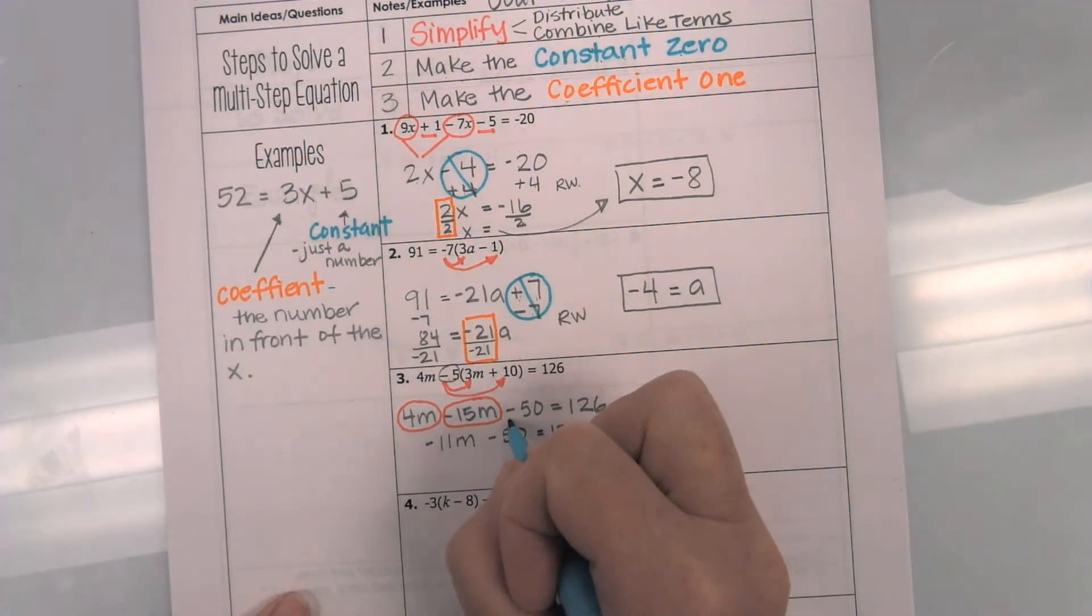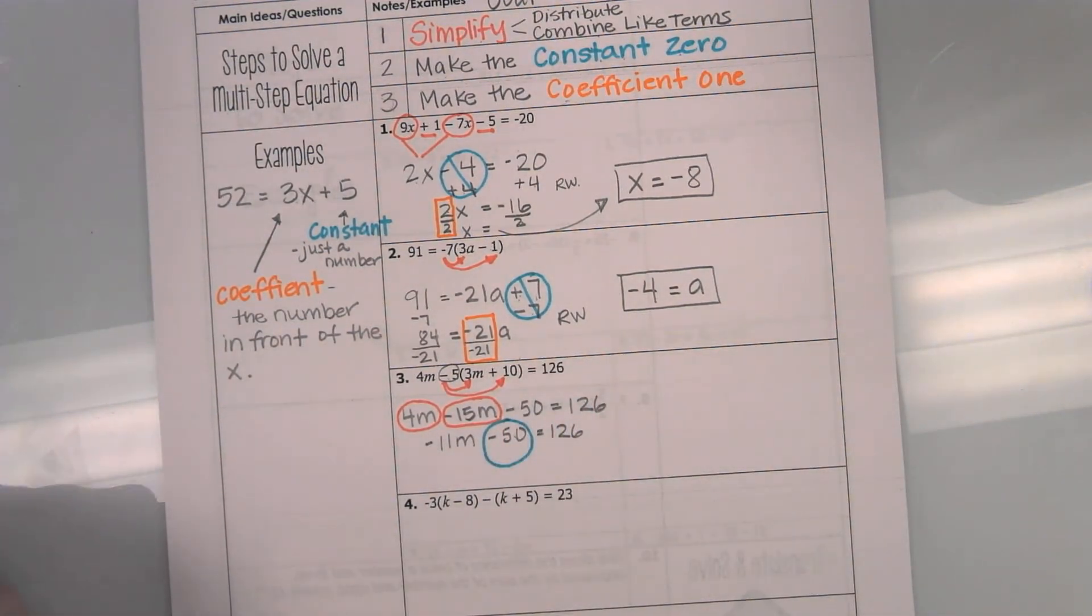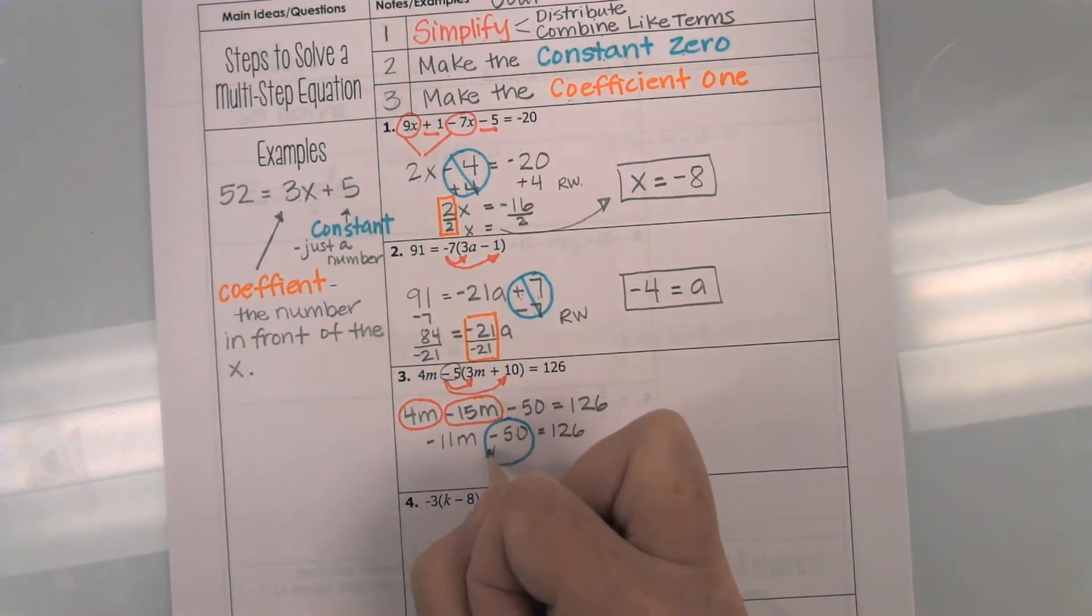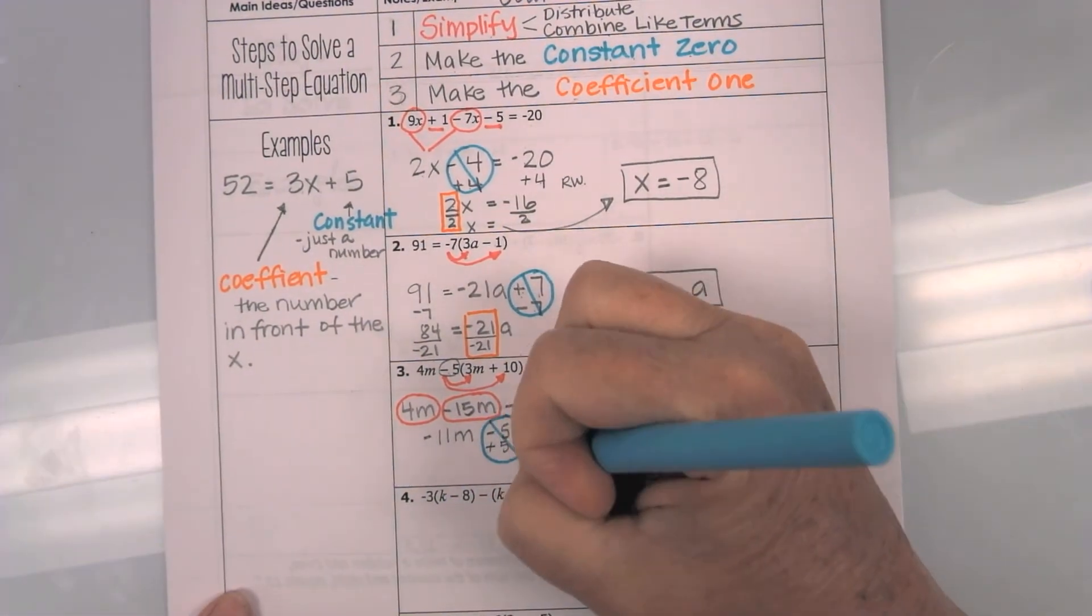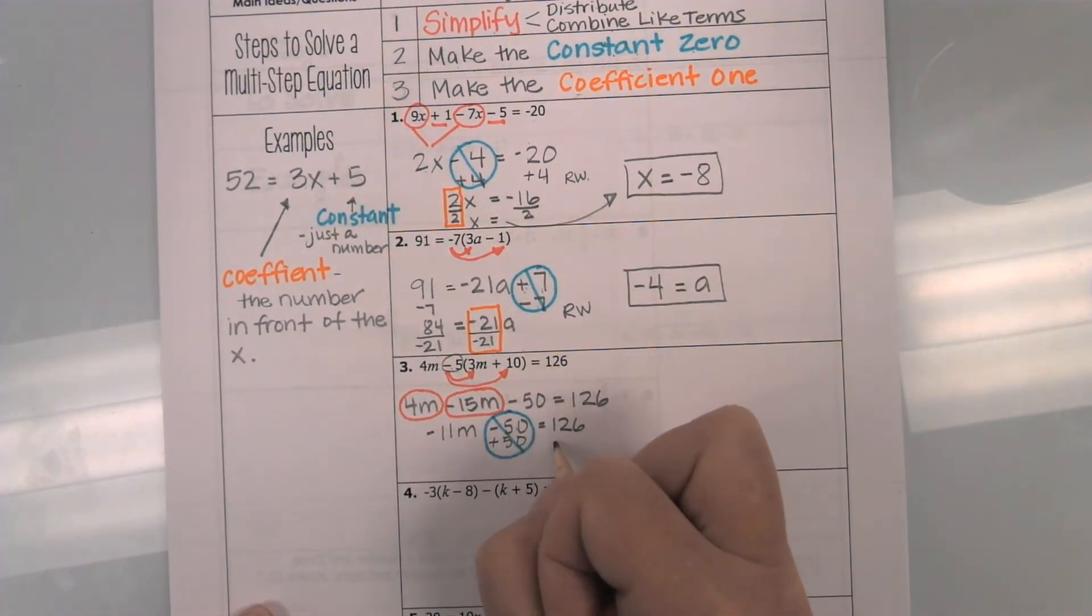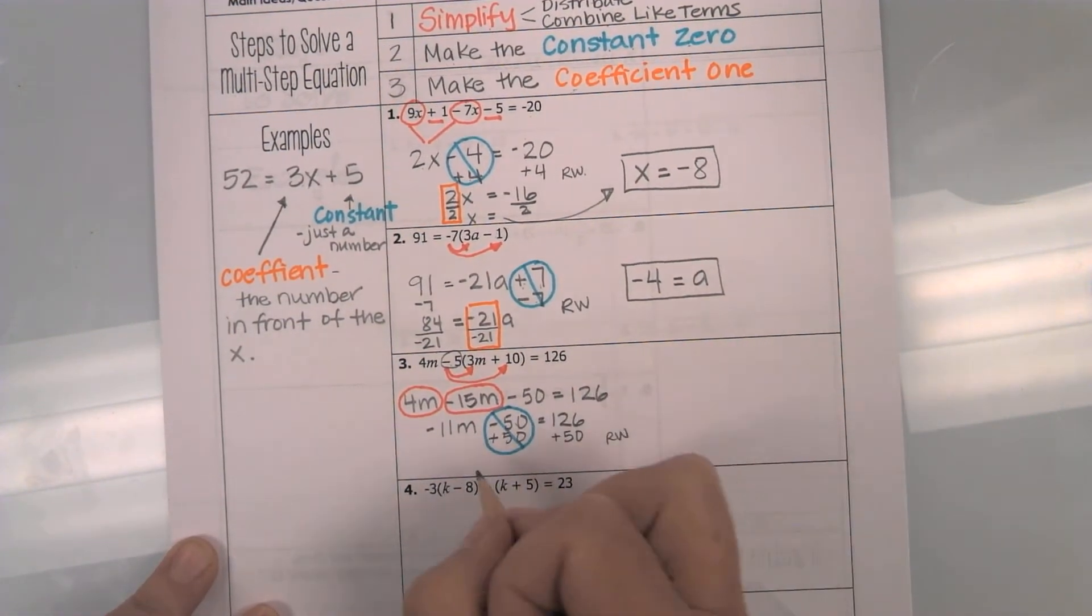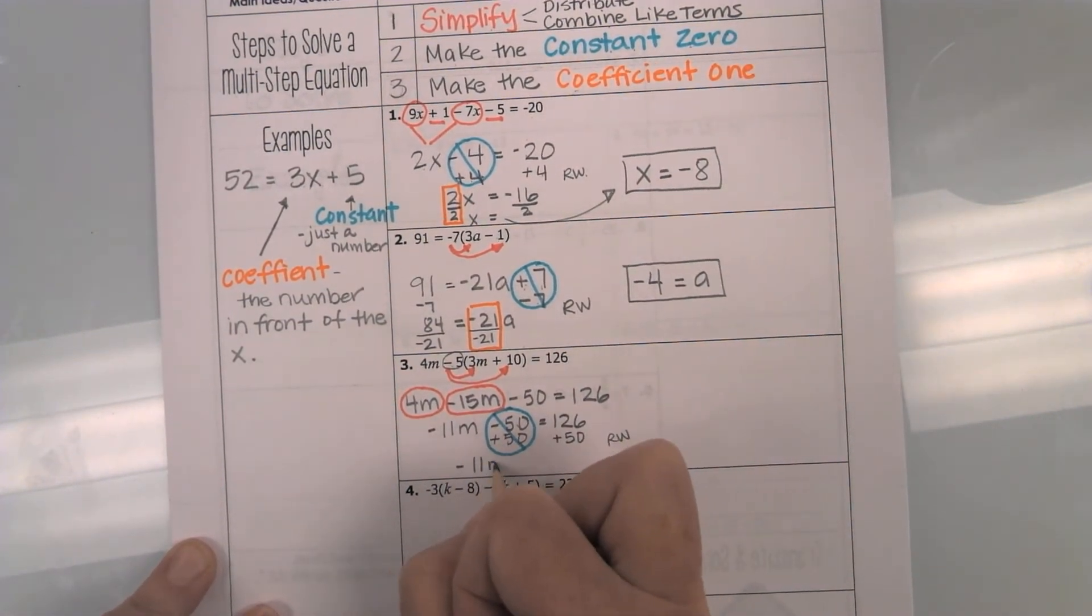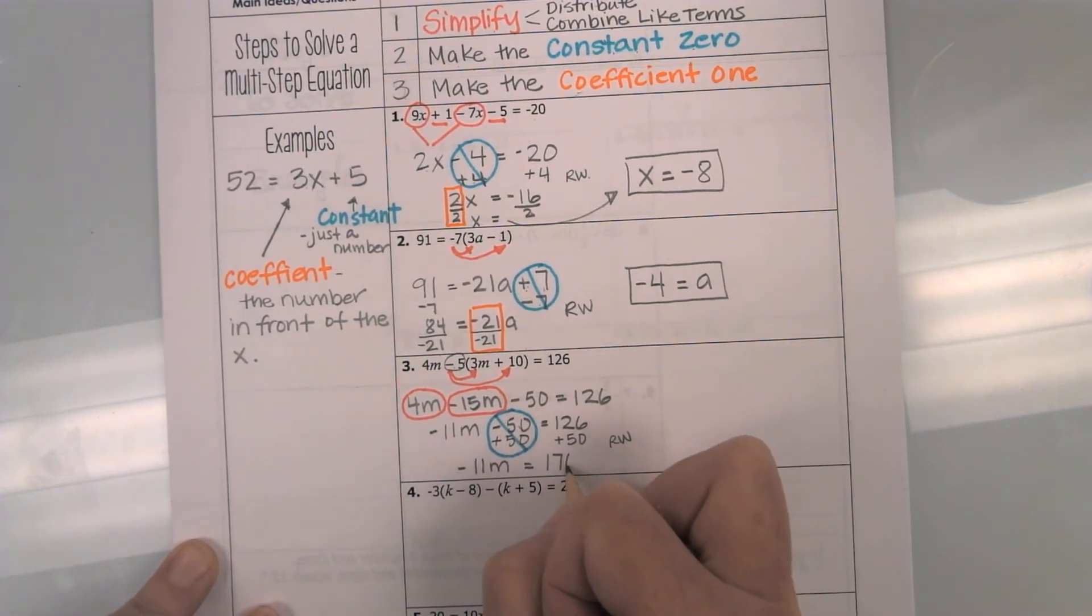So, remember, I do want to make this a 0. What am I going to do to make that a 0? I am going to add 50, because then it becomes a 0, and I no longer need to write it. So, remember, whatever I do to one side, I do to the other. And rewrite, because this is messy. Now, I have a negative 11m, that's a 0, equals 176.